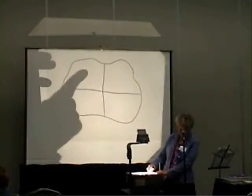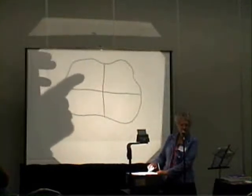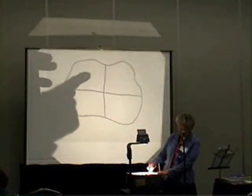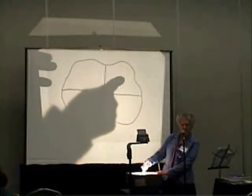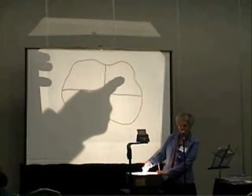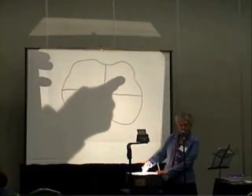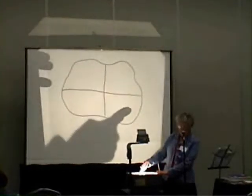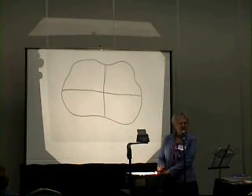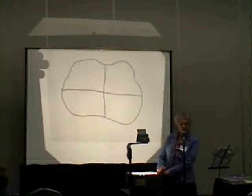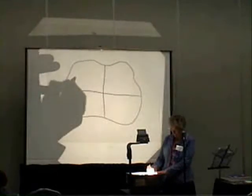Say: I have four quadrants. One. Two. Follow my direction as I point, so you do it in the order that I am doing it. Three. Four. Four quadrants. Now say this: in quadrant one, I am drawing a mouth. In quadrant one, I am drawing a mouth.